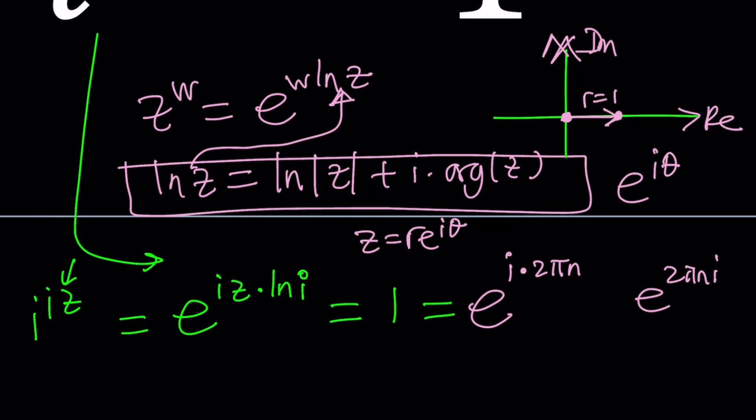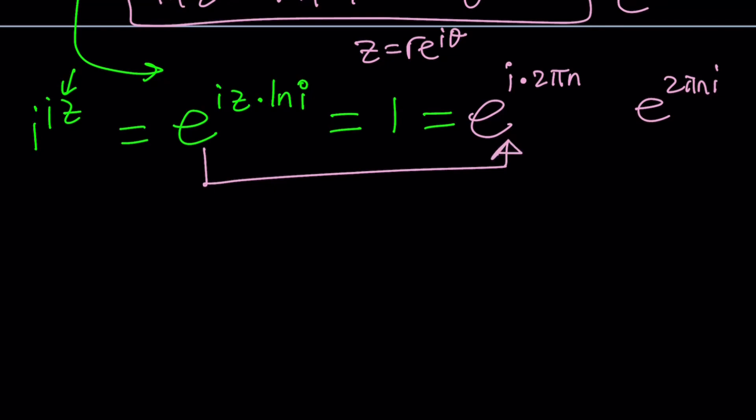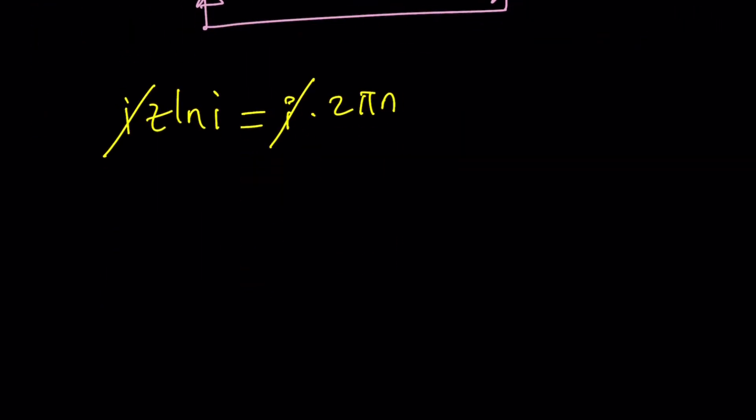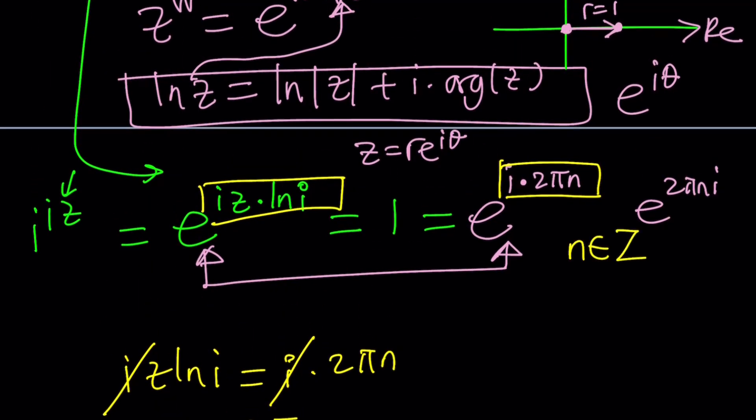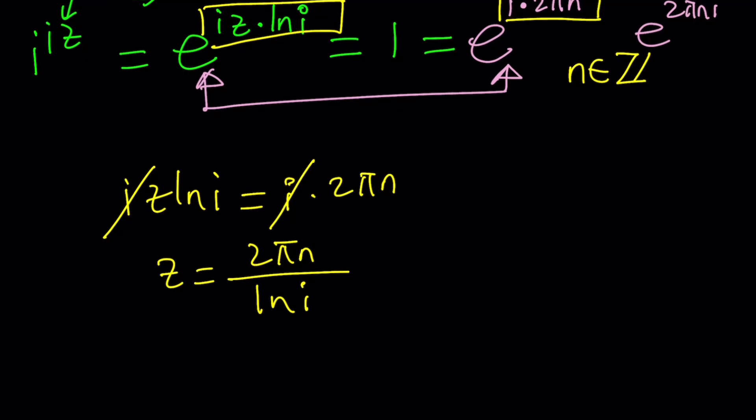Now here's the equation. How do you solve that? By setting them equal to each other. Forget about the basis or natural log both sides. You got an equality. iz ln i equals i times 2 pi n. Let's cancel out the i's and we're going to end up with z equals 2 pi n over ln i. One thing I forgot to talk about is n is an integer. n is an integer so this expression is an integer multiple of 2 pi divided by ln i. What is ln i?